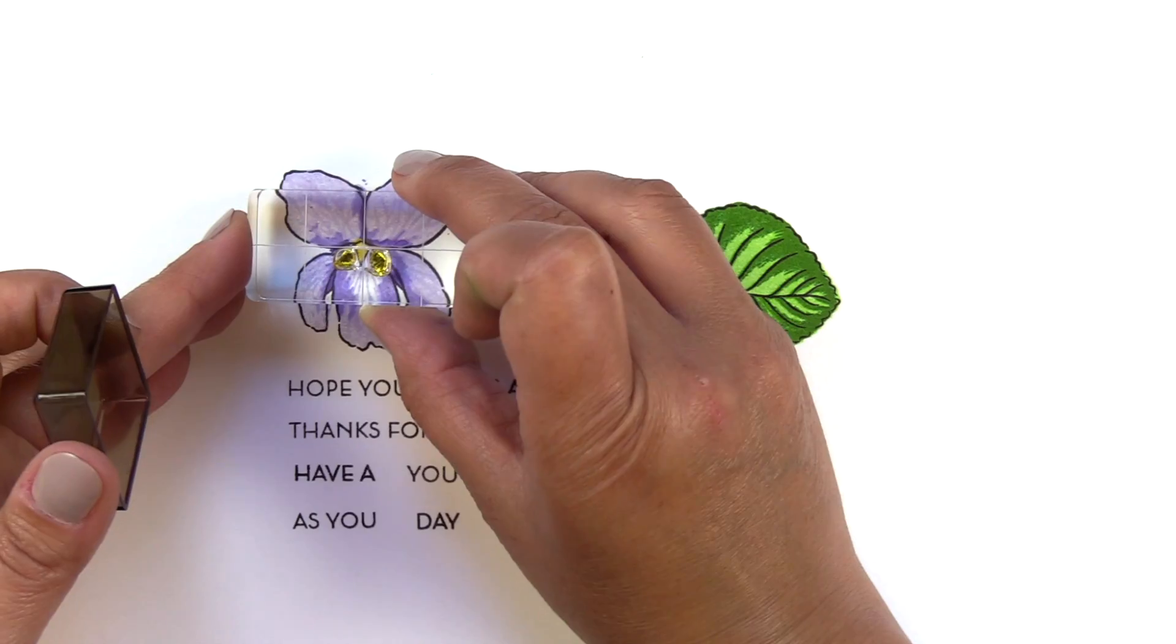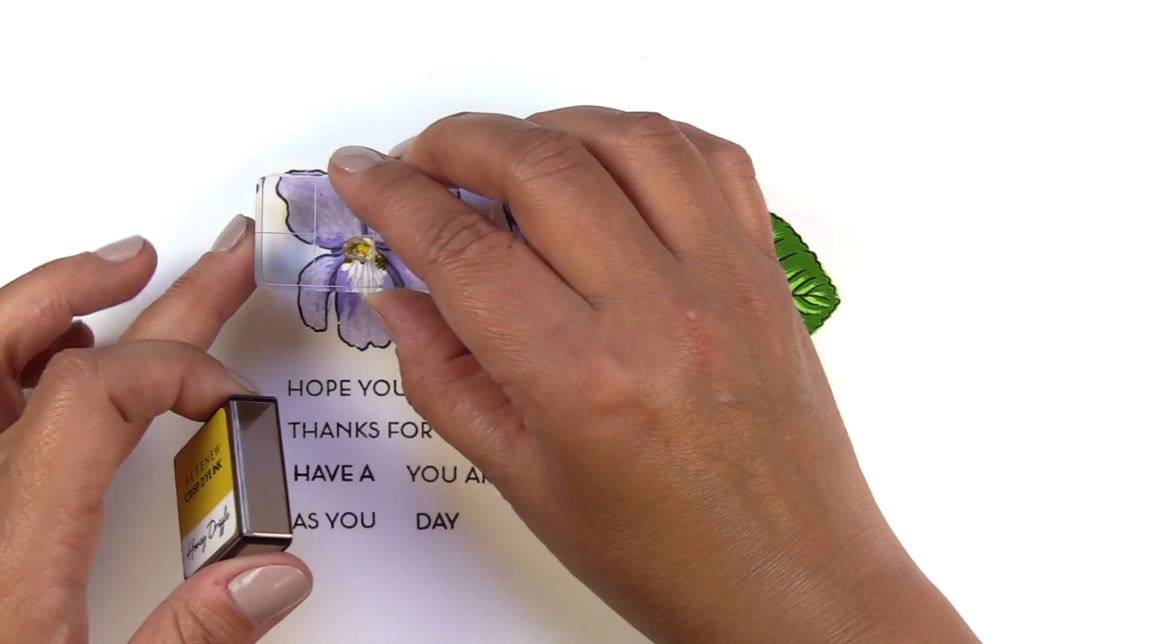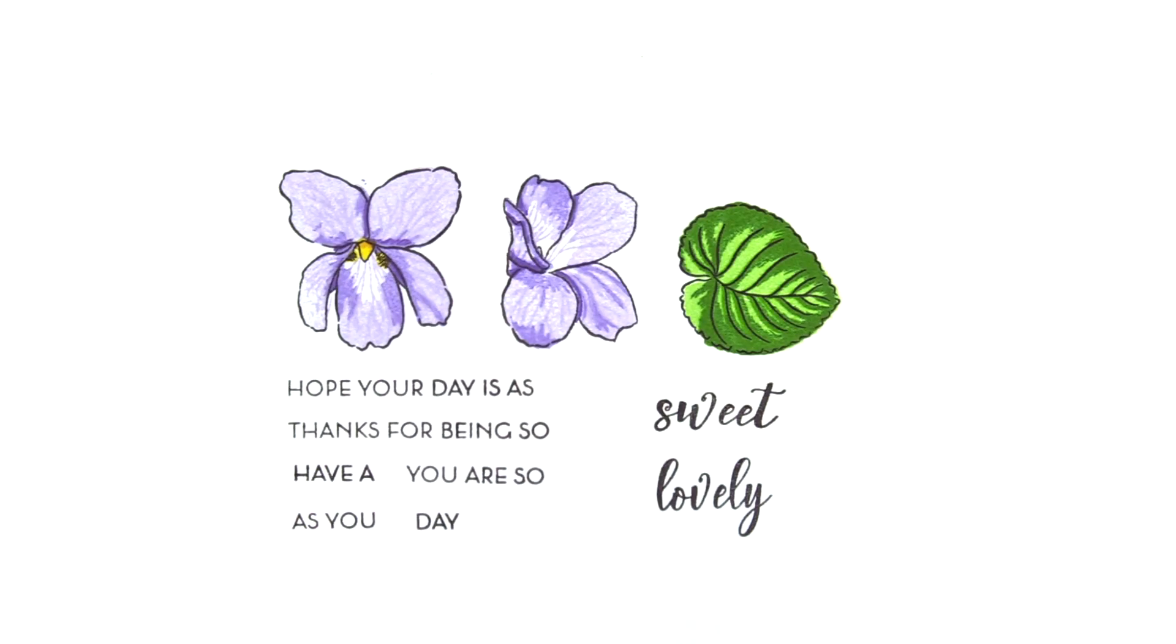Here are the centers. I'm just using Citrus Burst and Honey Drizzle for the centers. And you can see the eight sentiments there.